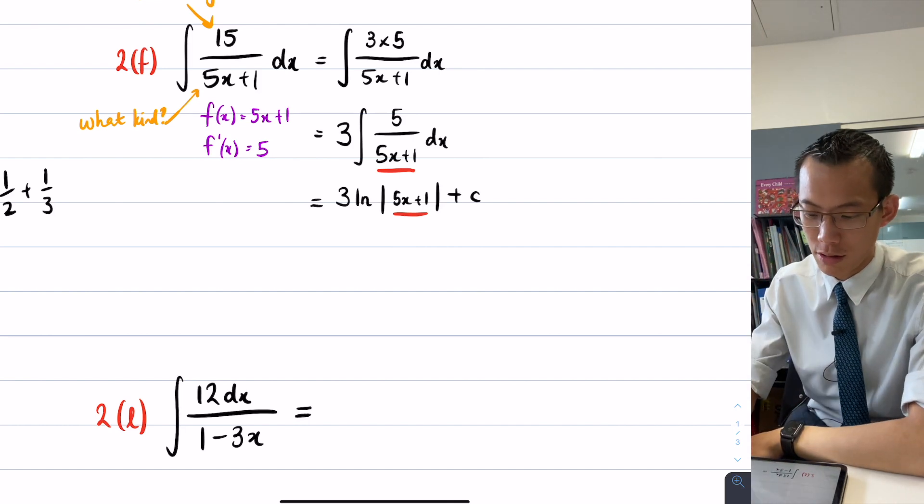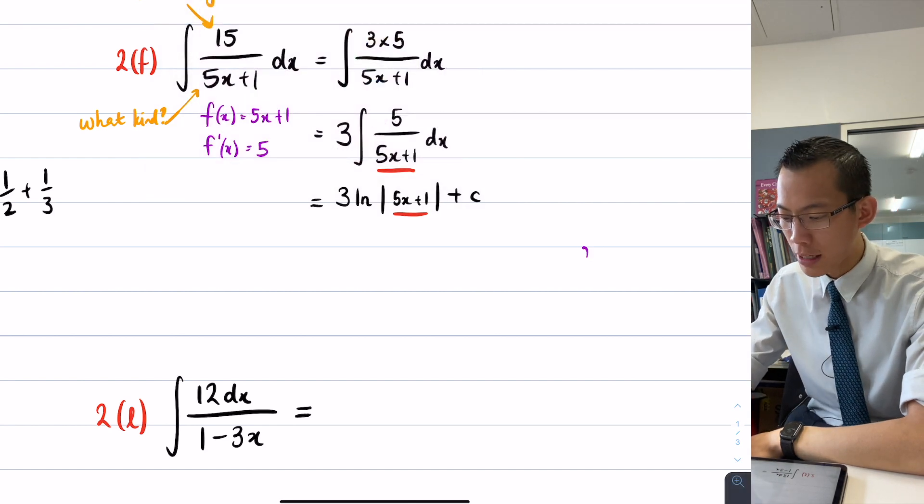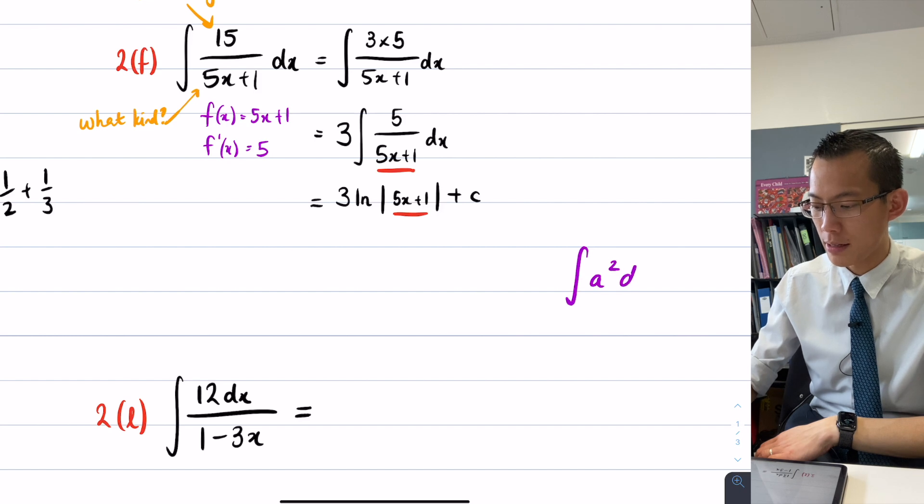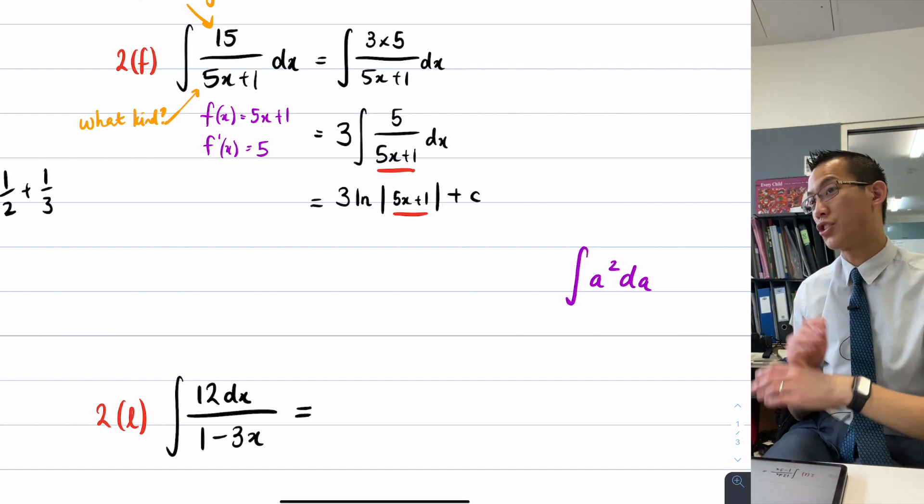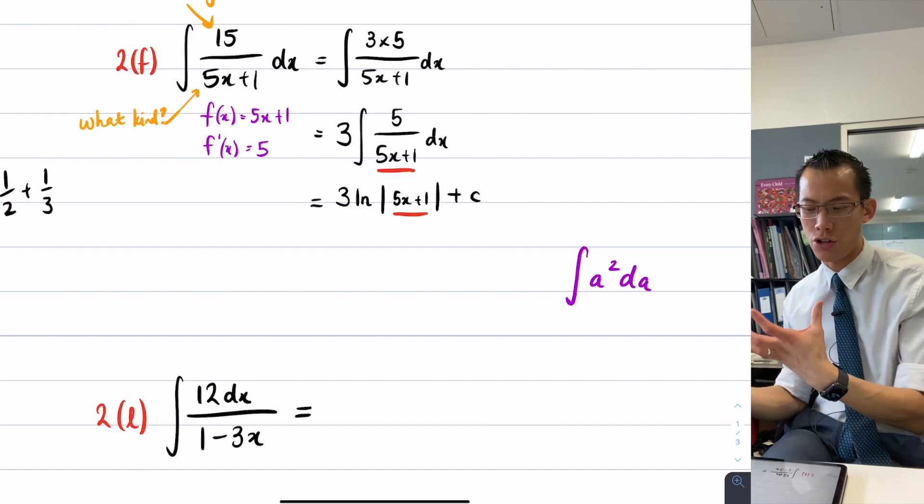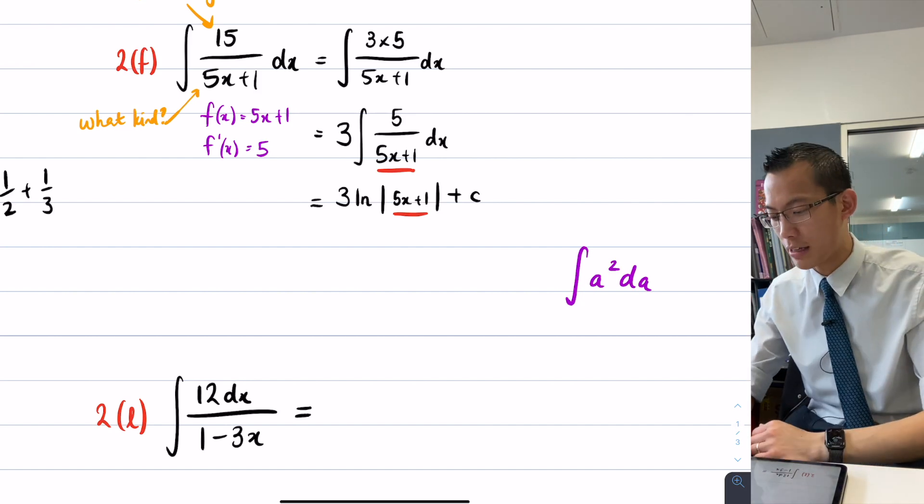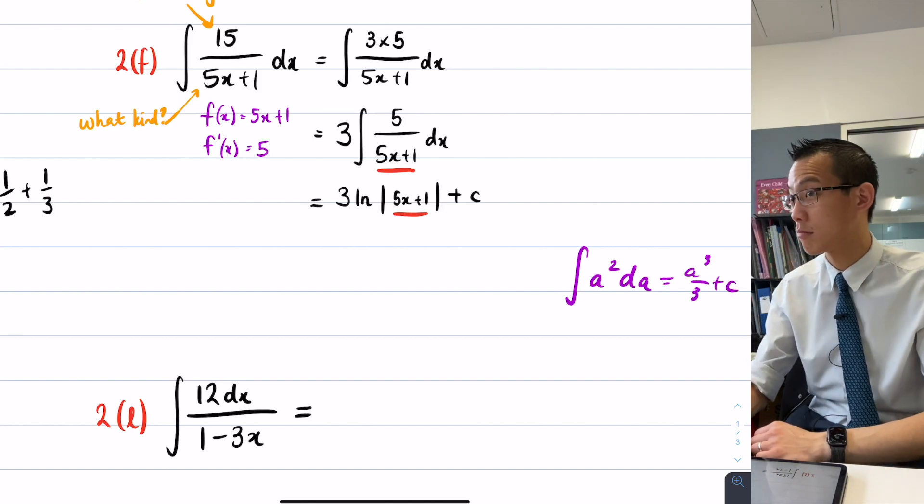So for example, let's just do this up on the side. I could give you something like the integral of a squared dA, which tells you, hey, pay attention to the a. The a is the variable that you need to be looking at. You would want to increase the power and divide, so you would get something like a cubed over 3 plus my constant.